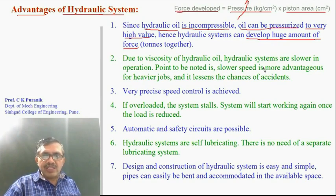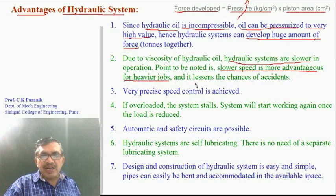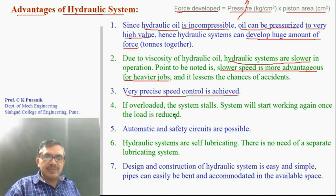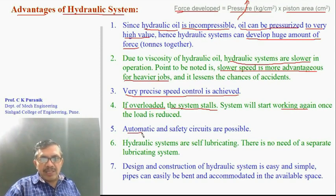A second advantage is that hydraulic systems are slower in operation, which is advantageous for heavy jobs. For example, if a big rock is to be lifted, it should be lifted slowly; otherwise it may cause an accident. Third, hydraulic systems are very precise — very precise speed control can be achieved. If overloaded, the system will stall, meaning it stops temporarily, and once the load is removed it will start working again. Automatic systems and safety circuits are also possible with hydraulic systems.